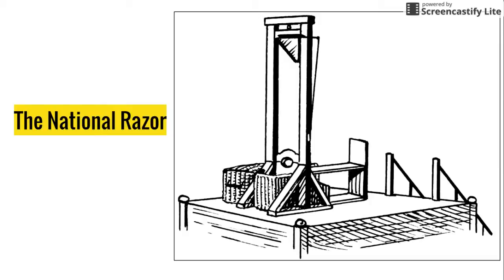They called the guillotine the National Razor. It became a symbol of the revolutionary cause, strengthened when the executions of the king and Queen Marie Antoinette happened. You might know the name Marie Antoinette as the woman who said 'let them eat cake.' The context was that she was told the poor are hungry and have no bread, and she said 'let them eat cake,' showing she was clearly out of touch with the poor. If they can't afford bread, how are they going to afford cake? This mentality of an upper-class aristocrat being completely out of touch with the working class remains relevant even today.